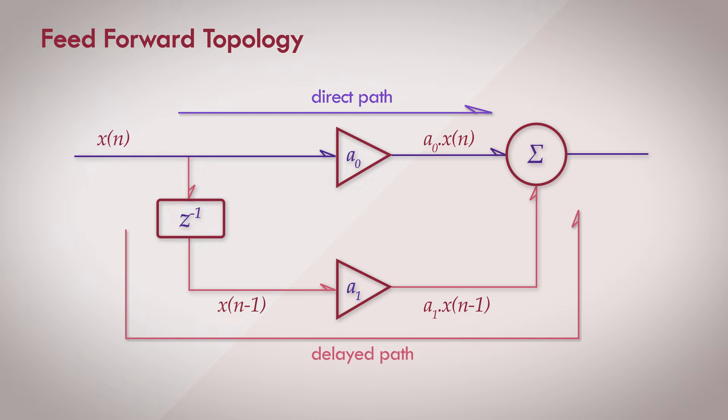The two signal paths merge back together and the output of the circuit is the sum of the direct path and the delayed path. So that will be a0 times x(n) plus a1 times x(n-1) because it's been delayed.